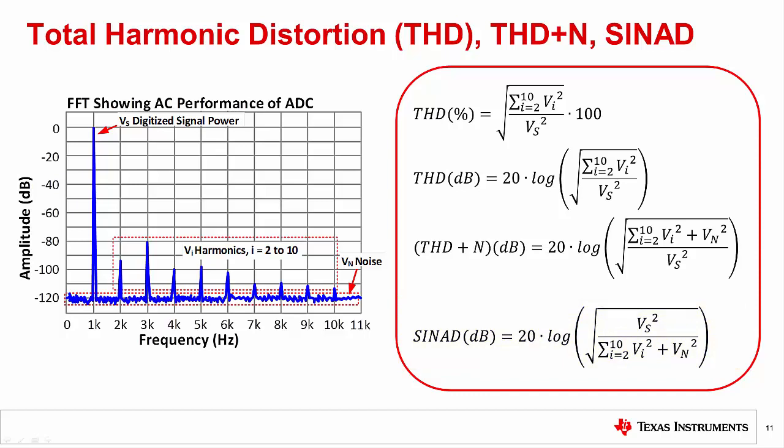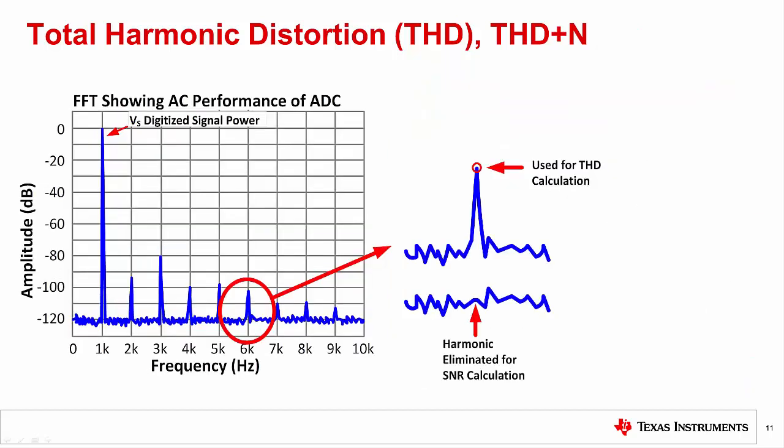In decibels, taking the reciprocal will just change the sign of the number. Note that SINAD or THD plus N will always be worse than either the THD or SNR because SINAD is really a combination of the two error sources. It is important to note that the harmonic component included in the THD calculation is omitted from the SNR calculation. The harmonic component is replaced with the average noise at the frequency where the harmonics occur. The idea is that distortion and noise are two separate error sources, and we don't want to include distortion in the noise calculation.